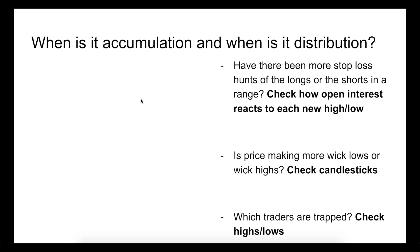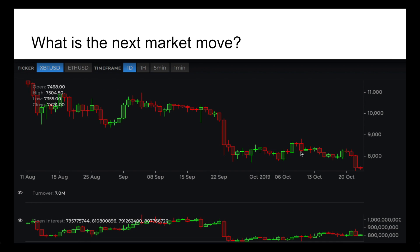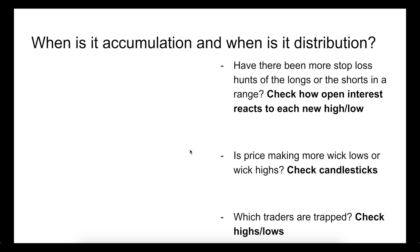So when is something going to be accumulation and when is it going to be distribution? I wanted to give three check marks — three things you can check. First: have there been more stop loss hunts of the longs or the shorts? Are you seeing more secondary tests of highs or secondary tests of lows? Are you seeing a larger drop in open interest when a new high is formed or when a new low is formed?